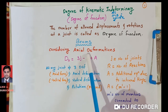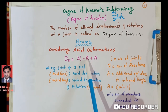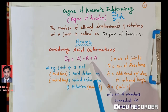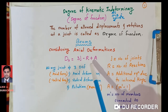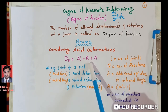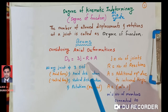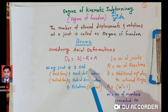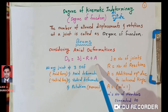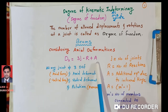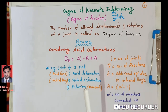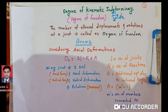We subtract R — the number of reactions — which depends on the type of support provided: fixed, hinge, simple, or roller. Then we add A, the additional equation due to internal hinges. Now I will explain the degrees of freedom for different support types.